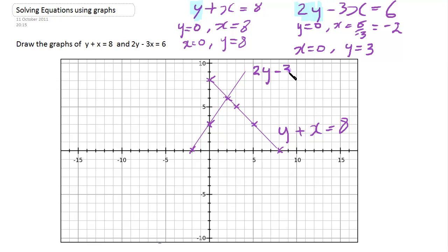We can see those two lines. This is the line 2y - 3x = 6. Where do they cross? They cross just here at this point where we have x = 2 and y = 6. So the solution to our equation is x = 2 and y = 6.